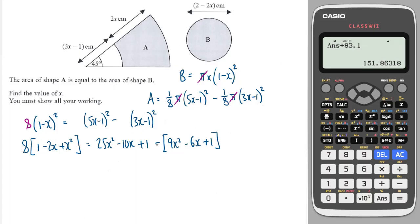Great. I put the second one in brackets because I'm taking that away, so I'm going to make sure that I take away every term. I'm going to swap the signs of all of those in a minute. Okay, multiplying this out by 8 gives me this.